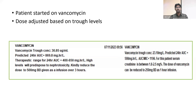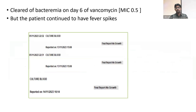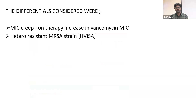The patient was started on vancomycin; the dose was adjusted based on trough levels. Patient cleared bacteremia on day 6 of vancomycin, as seen in the blood cultures taken on the 5th and 8th. However, the patient continued to have fever spikes even after clearing of bacteremia.